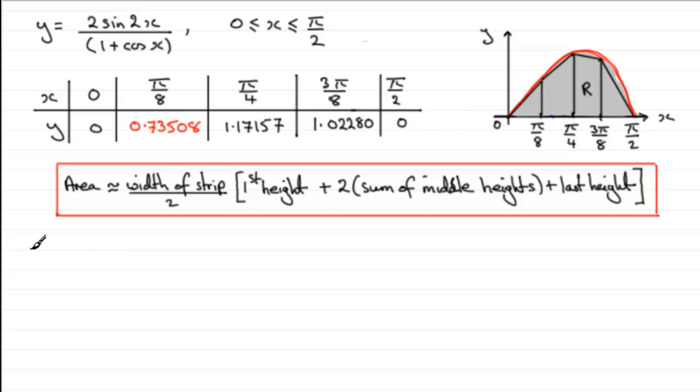Okay, so we can say then that the area of r is going to be approximately then half the width of a strip. We can get the width of the strip just simply by looking at this interval here. It's going to be pi upon 8. And then we multiply that by the first height, which is clearly going to be the first value in the table 0. I'm going to put it in as a token that I'm using the formula regardless.